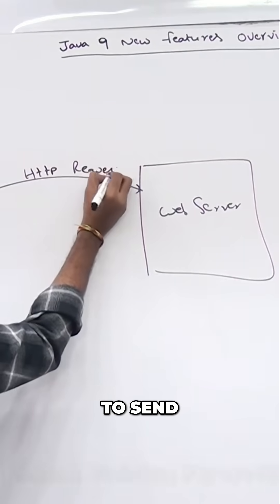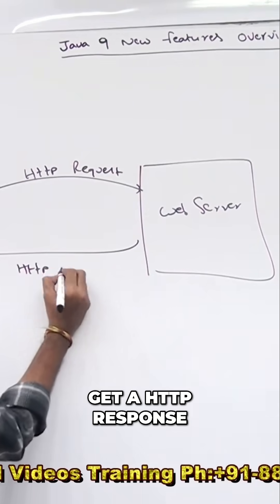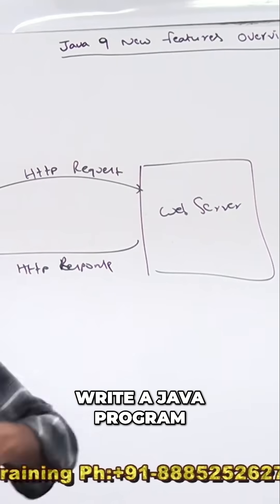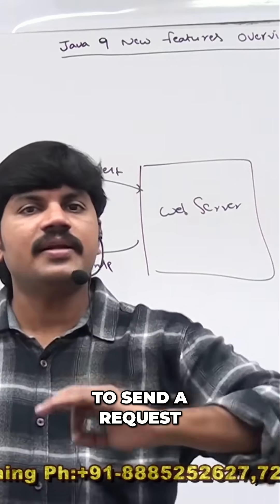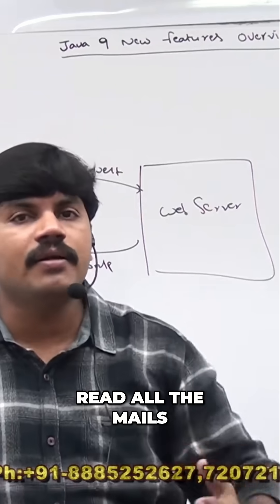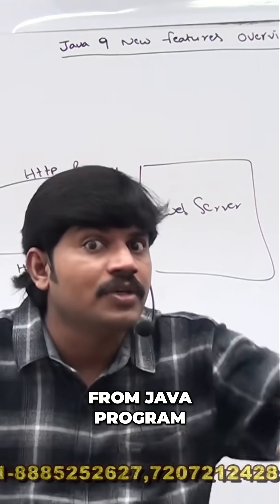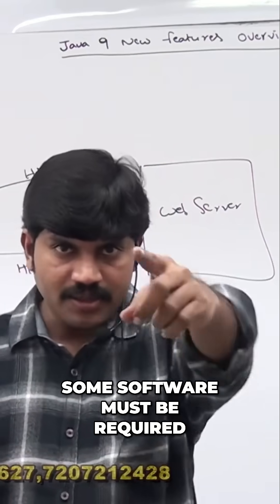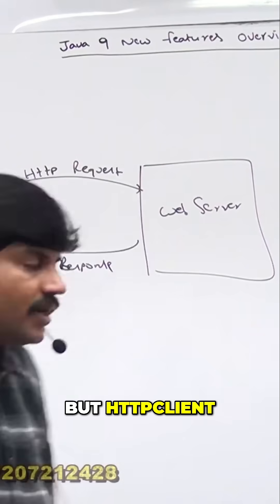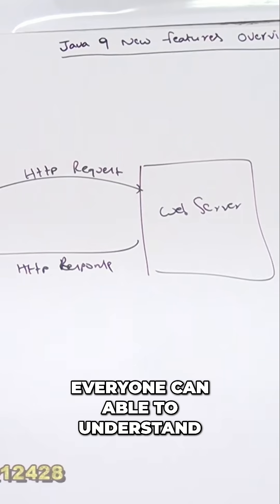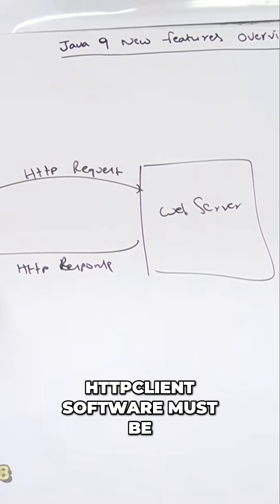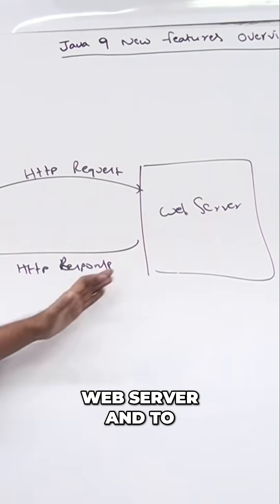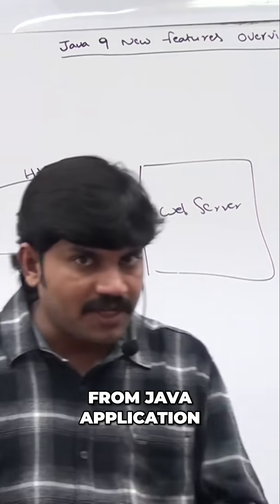I want to send an HTTP request, then get the HTTP response, read it, and process it. For example, write a Java program to send a request to Gmail and read all the mails. To do this from a Java application, some software must be required — that software is nothing but an HTTP client, which is needed to send HTTP requests to the web server and process the response.